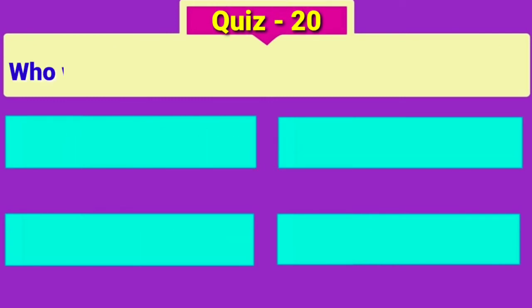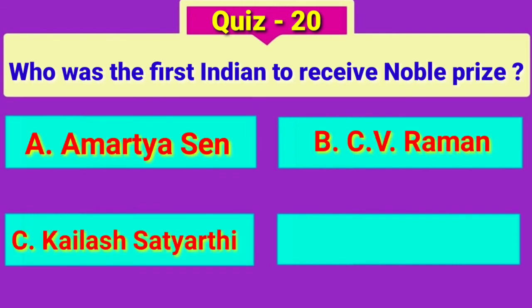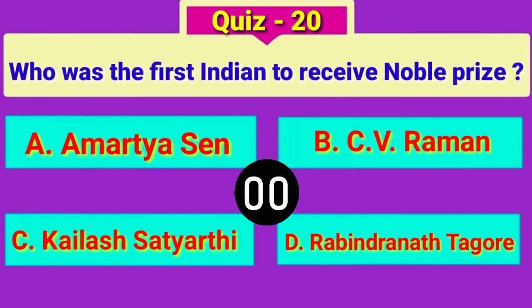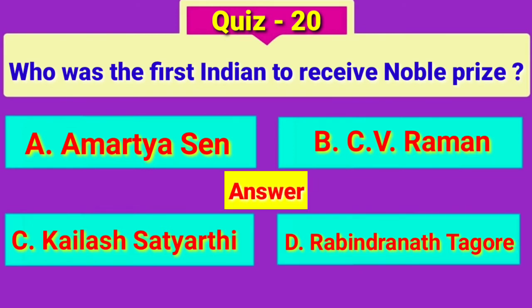Question number 20. Who was the first Indian to receive the Nobel Prize? Answer: Rabindranath Tagore.